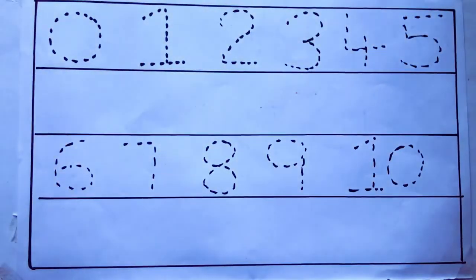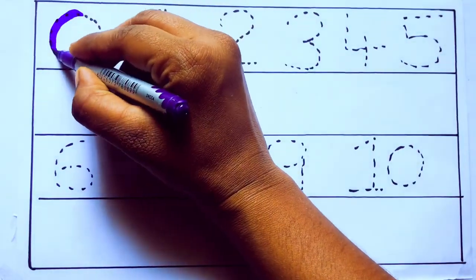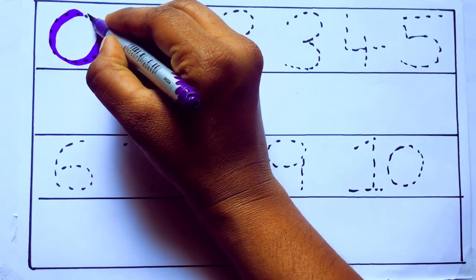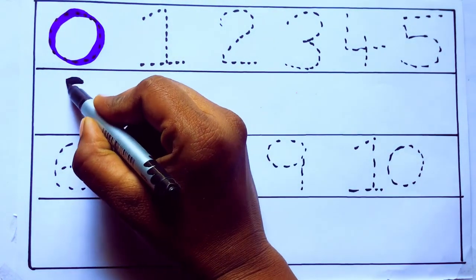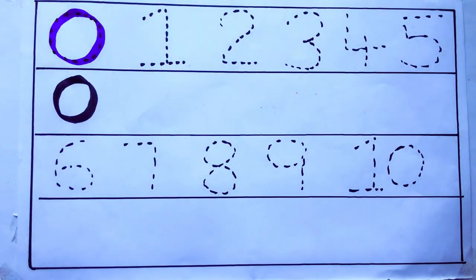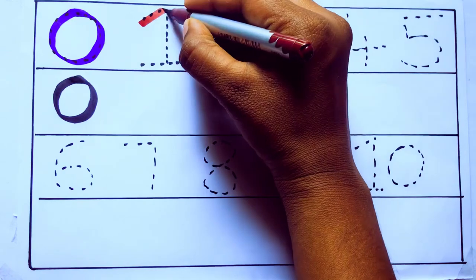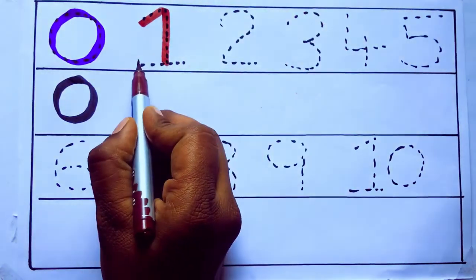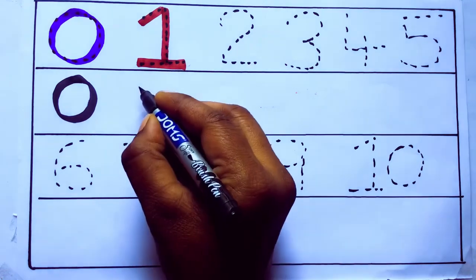Let's draw numbers. Violet color 0, Z-E-R-O. Brown color 1, O-N-E, 1. Number 1.